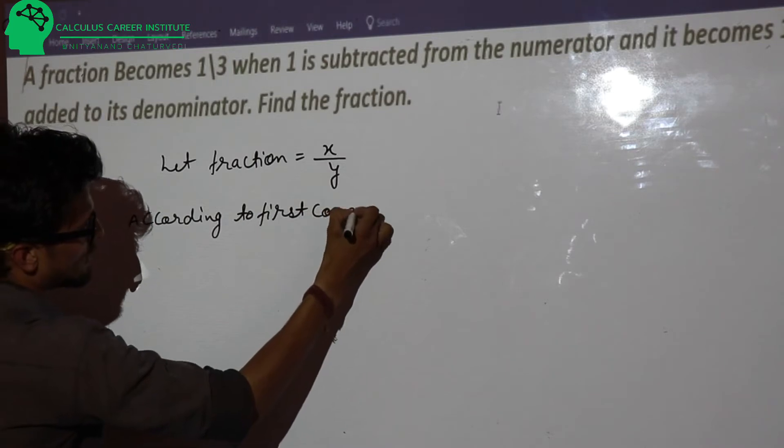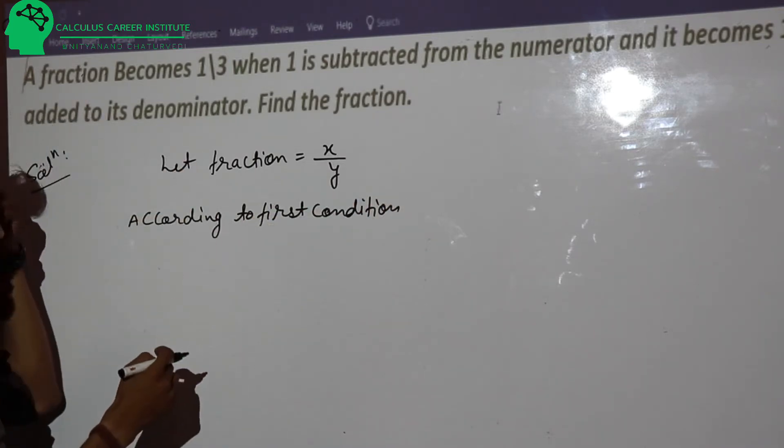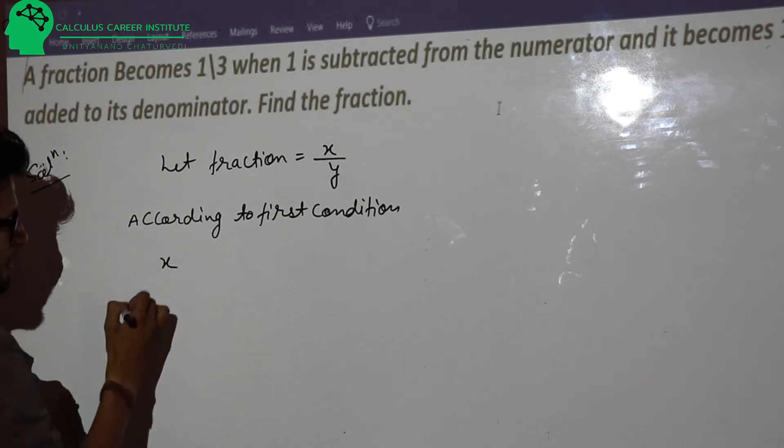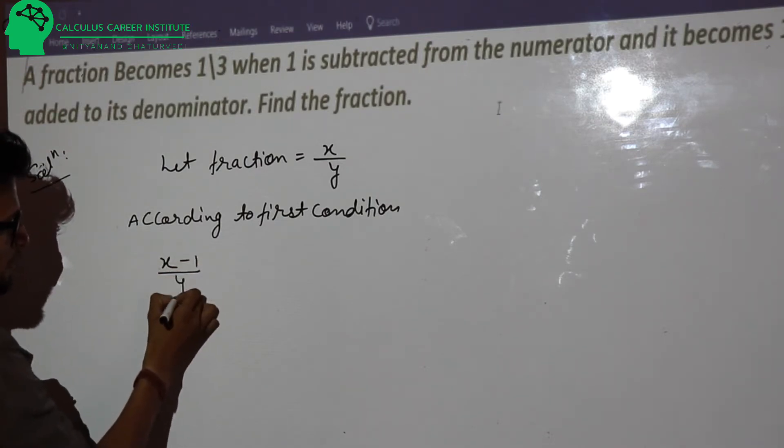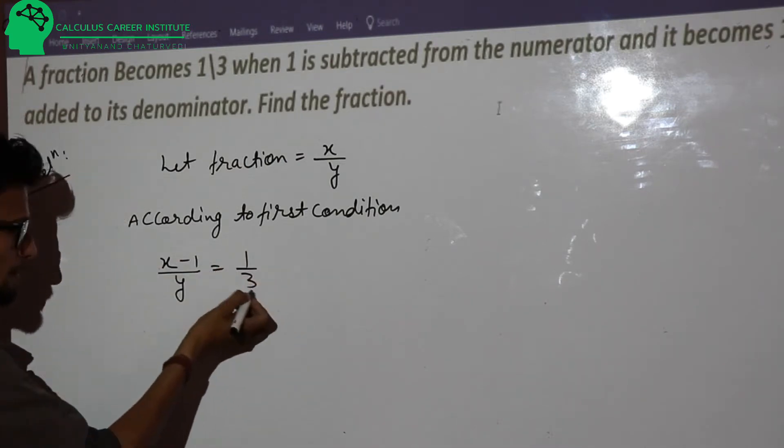According to first condition, we have said that if 1 is subtracted from the numerator, this is your numerator. This is subtracted from the numerator. If we have no change in denominator, this is 1 upon 3.